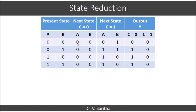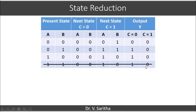State reduction. Observing the state table, we can see that states 1,0 and 1,1 are similar. For state 1,0: next states are 0,0 and 1,0, outputs are 1 and 0. For state 1,1: next states are 0,0 and 1,0, outputs are 1 and 0. Since they are identical, we will eliminate state 1,1. Wherever the next state is 1,1, we replace it with 1,0.